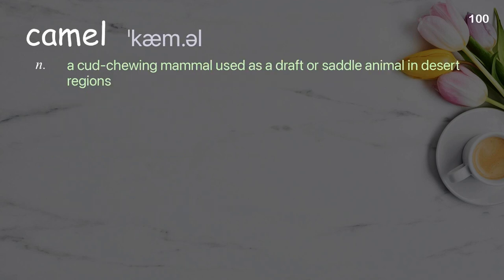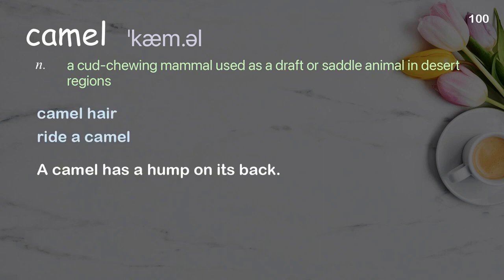Camel. A cud-chewing mammal used as a draft or saddle animal in desert regions. Examples: camel hair, ride a camel. A camel has a hump on its back.